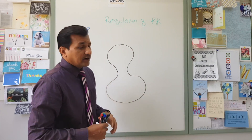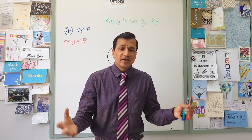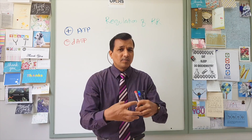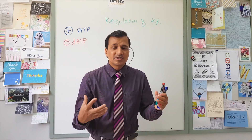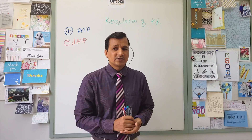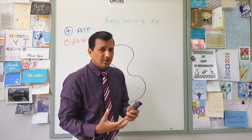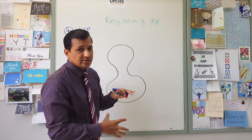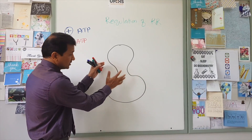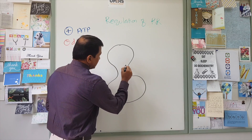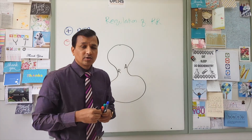Ribonucleotide reductase has two subunits coded by two different genes on different chromosomes. When these two subunits combine — forming a dimer — the active site of the enzyme is shared by both subunits, and the regulatory site is also shared by both subunits. To explain simply: there is an active site where catalysis occurs and a regulatory site where regulatory molecules bind.